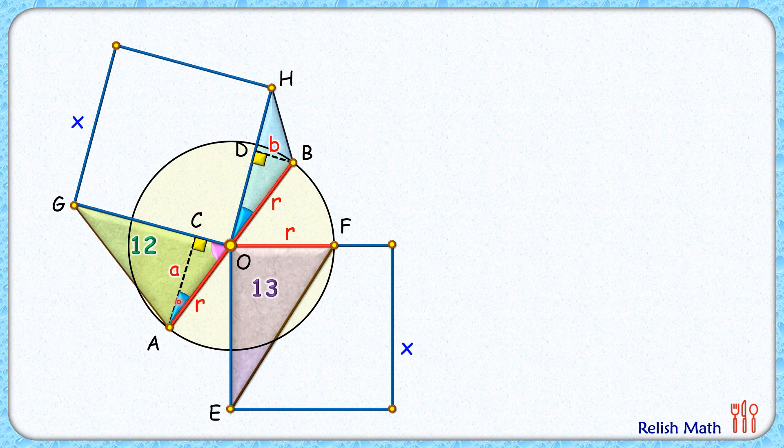Now these triangles have got angles as alpha, side r, and angle beta. Same way this triangle will have angle alpha, side r, and angle beta. Thus by angle side angle theorem triangle ACO is congruent to triangle ODB and thus this length OD will be same as AC length or a cm.